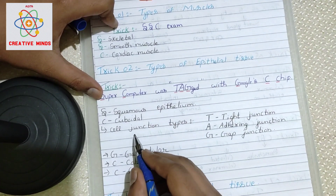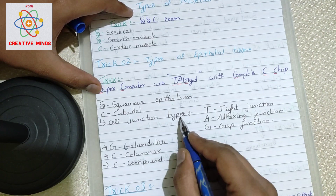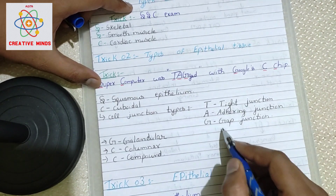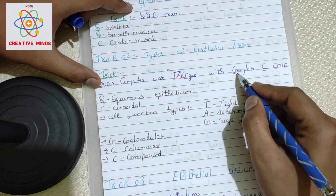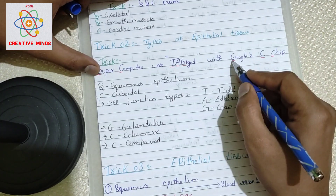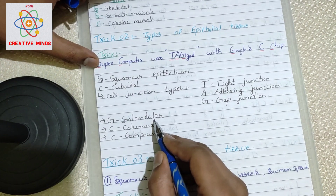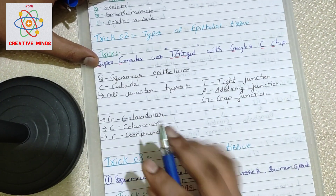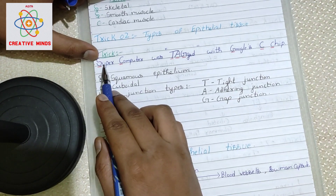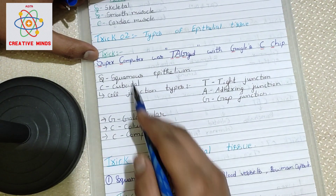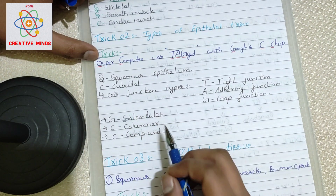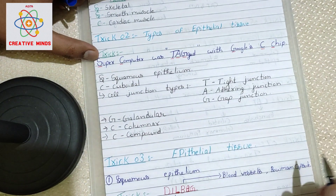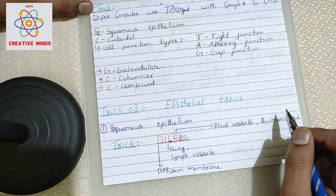From the word 'tagged,' we get cell junctions: T for tight junction, A for adhering junction, G for gap junction. Then back to 'Google's C chip': G is glandular epithelium, C is columnar epithelium, and the last C is compound epithelium. Just one sentence covers all these types of epithelial tissues. Trick number two completed.